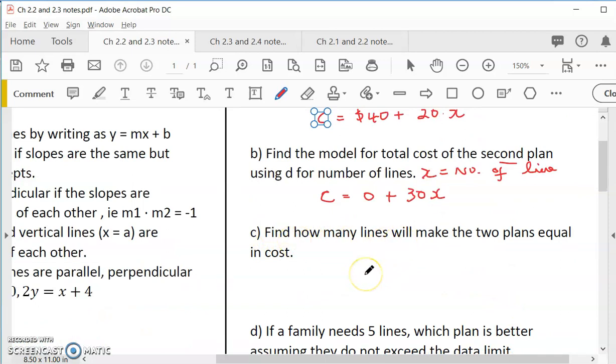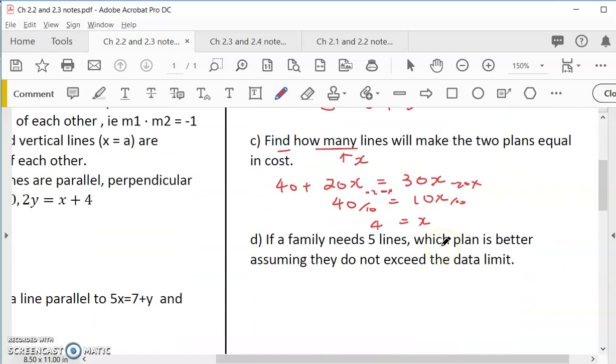Find how many lines. So the first two is modeling, just writing an equation. This one, C, is to find number. How many lines. So the number of line is X. So that means we have to solve for X so that the two plans equal in cost. So you have the two plans equal to cost. That means 40 plus 20X because the number of lines is what you want to order. So they should be the same. So let's solve it. So that means 40 is equal to minus 20X here. Minus 20X on this side. So it's 10X. So divided by 10. So X is equal to 4. That means if you order four lines, the two plans will have equal cost.